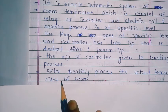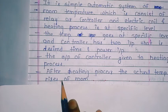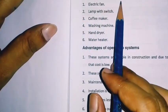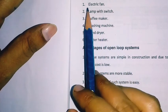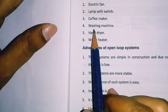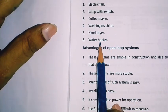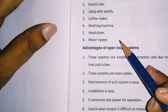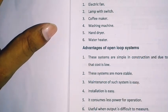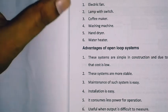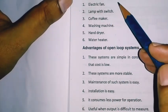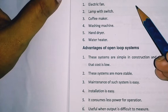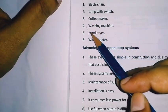Next, we look at the advantages and disadvantages of the open loop system. Other examples of open loop systems include: electric fan, lamp with switch, coffee maker, washing machine, hand dryer, and water heater. Note that non-automatic systems are also considered open loop systems.